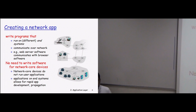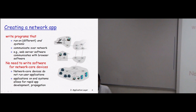Creating a network application: the developer has to write an application program that will run on end systems and communicate over the network. The end systems are connected to the internet through a gateway router, and the application program running on the end system provides all these services. These application programs communicate over the network either on a peer-to-peer architecture or on a client-server architecture.